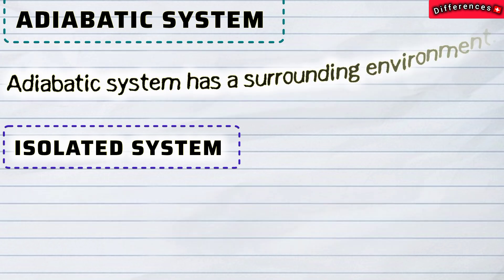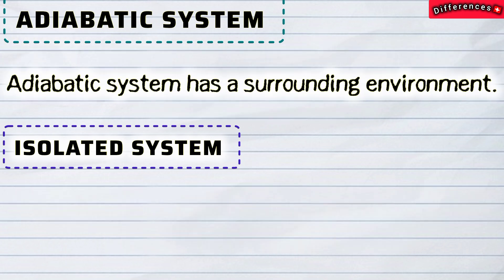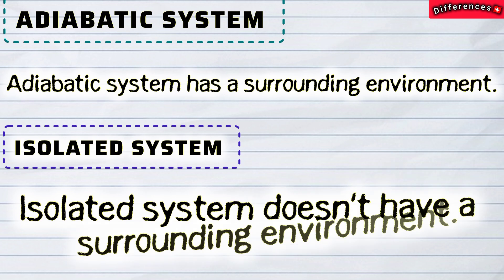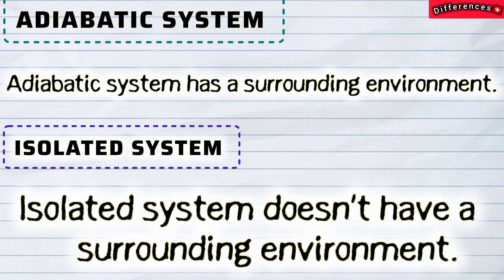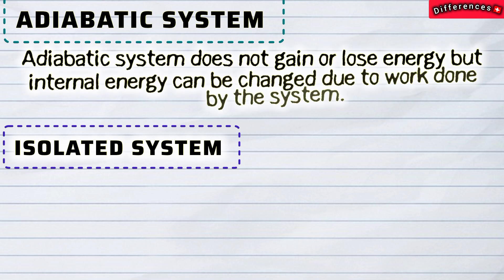Adiabatic system has a surrounding environment while isolated system doesn't have a surrounding environment. Adiabatic system does not gain or lose energy but internal energy can be changed due to work done by the system.